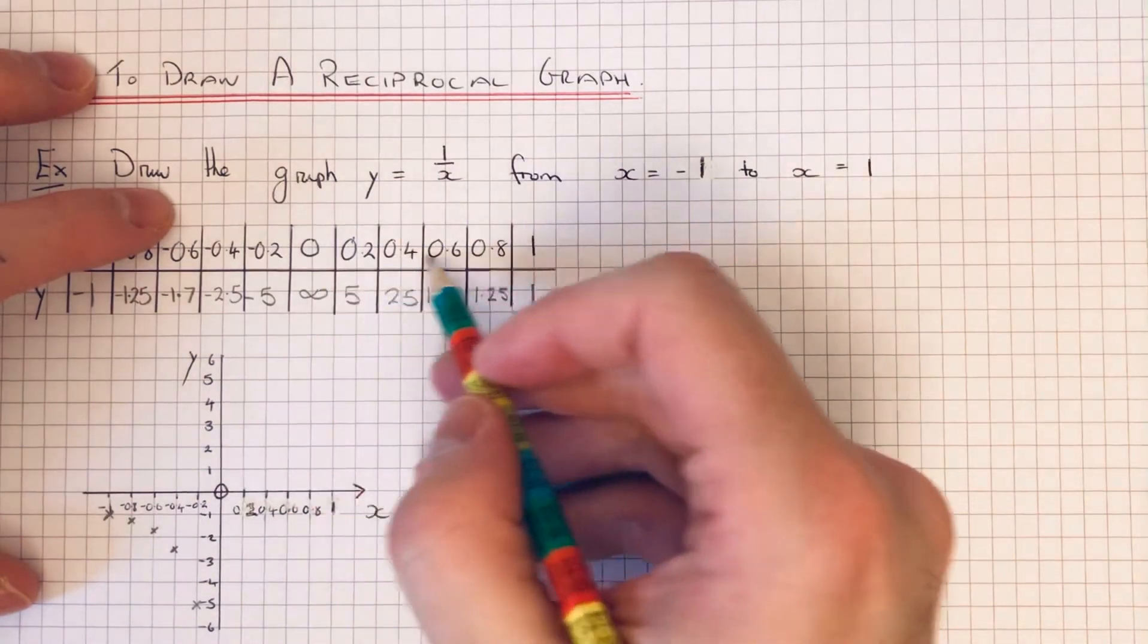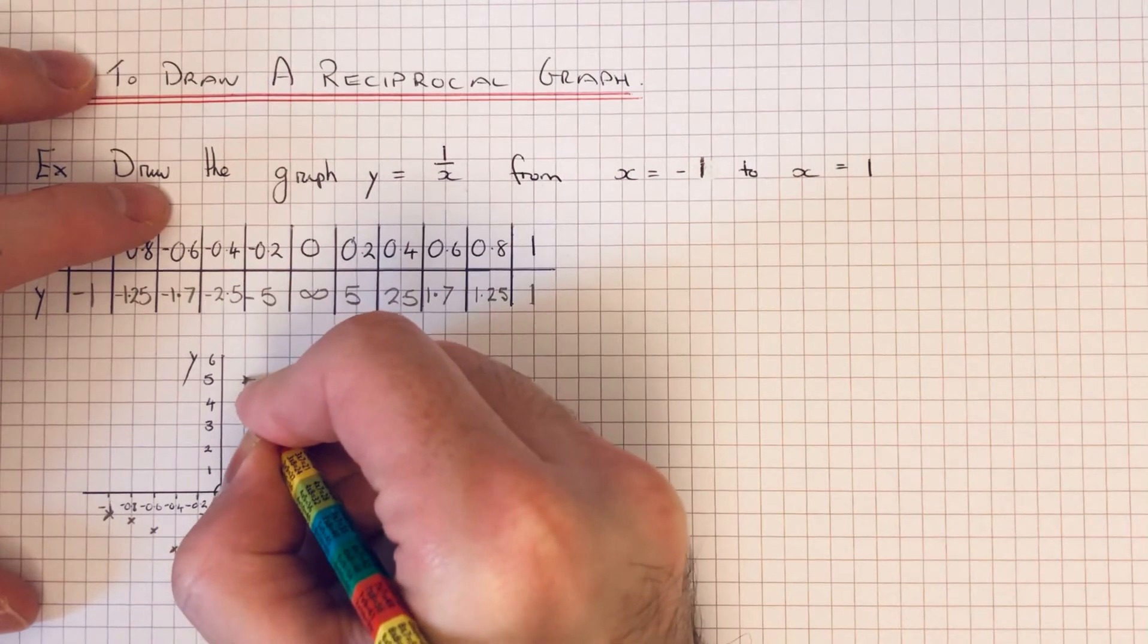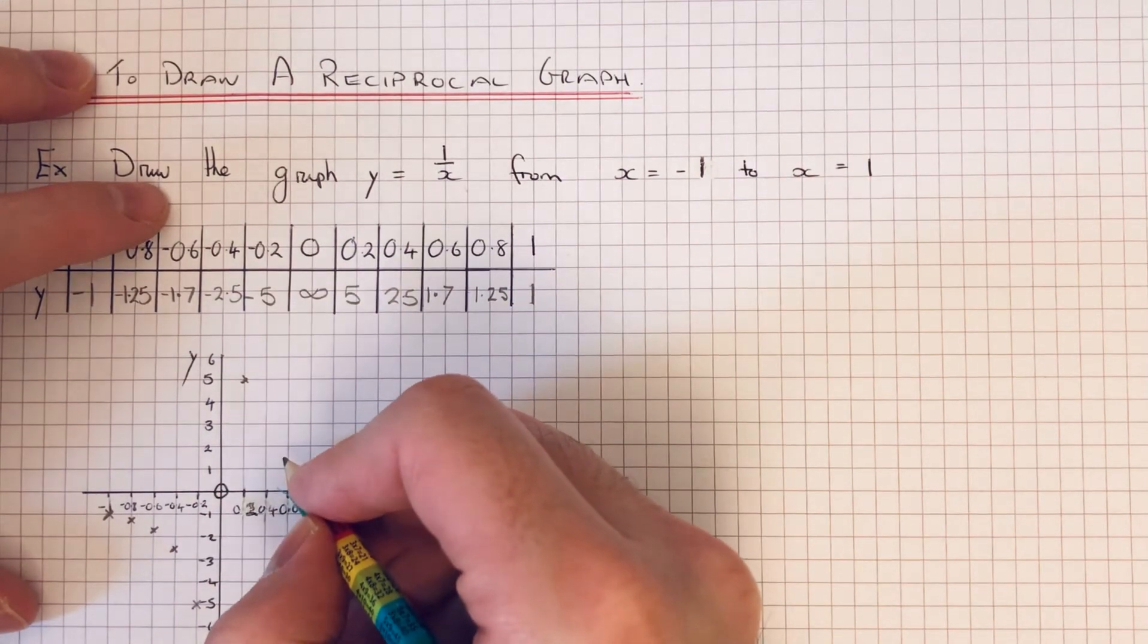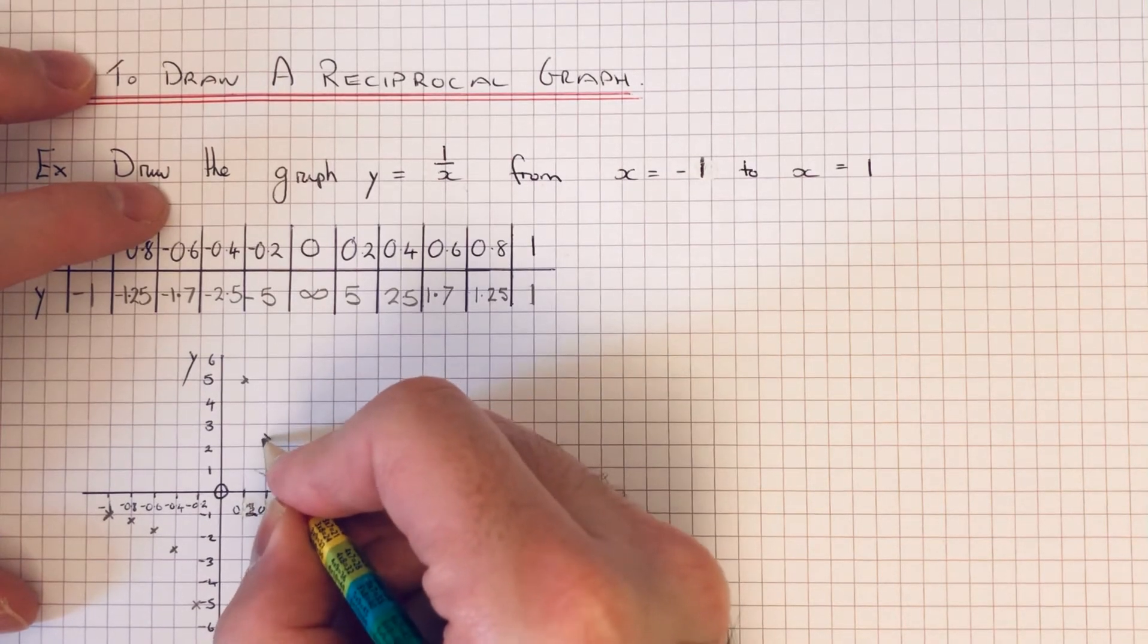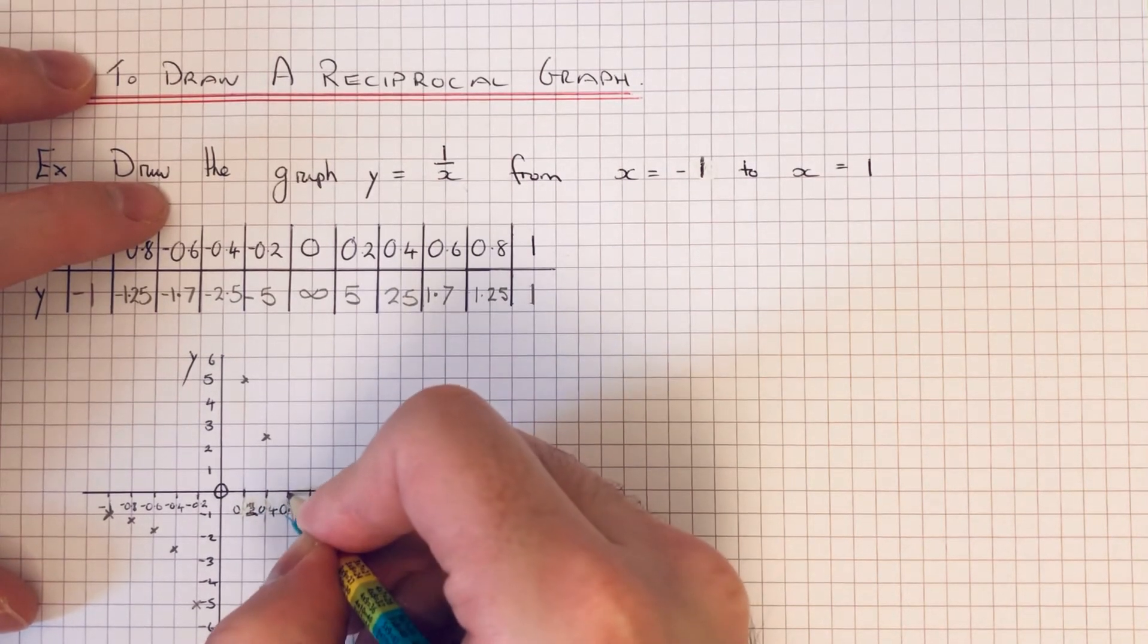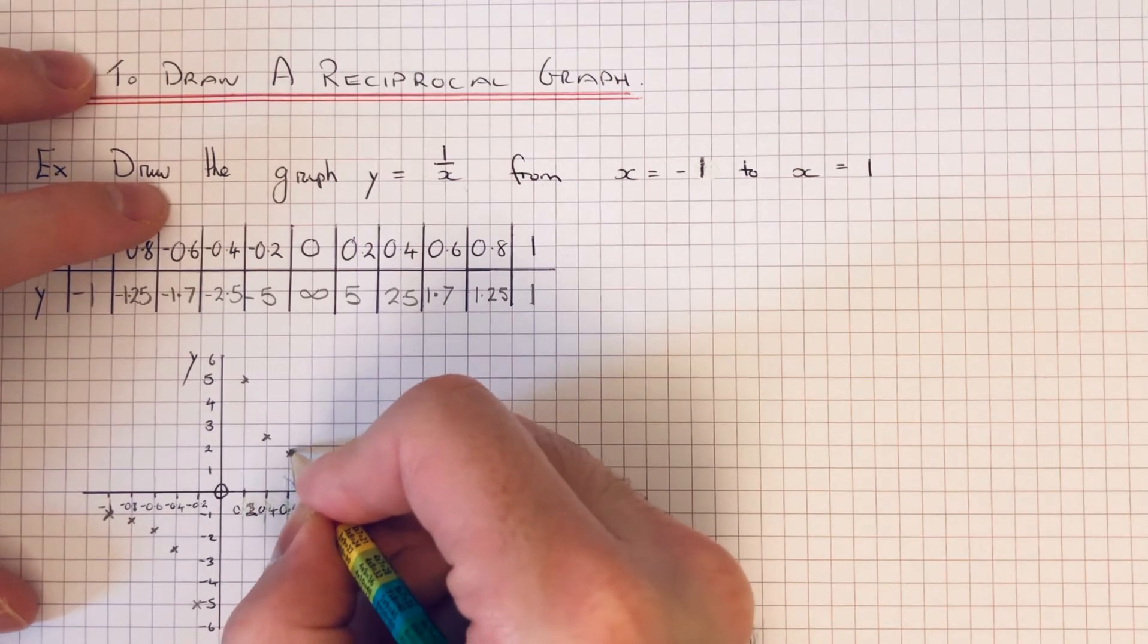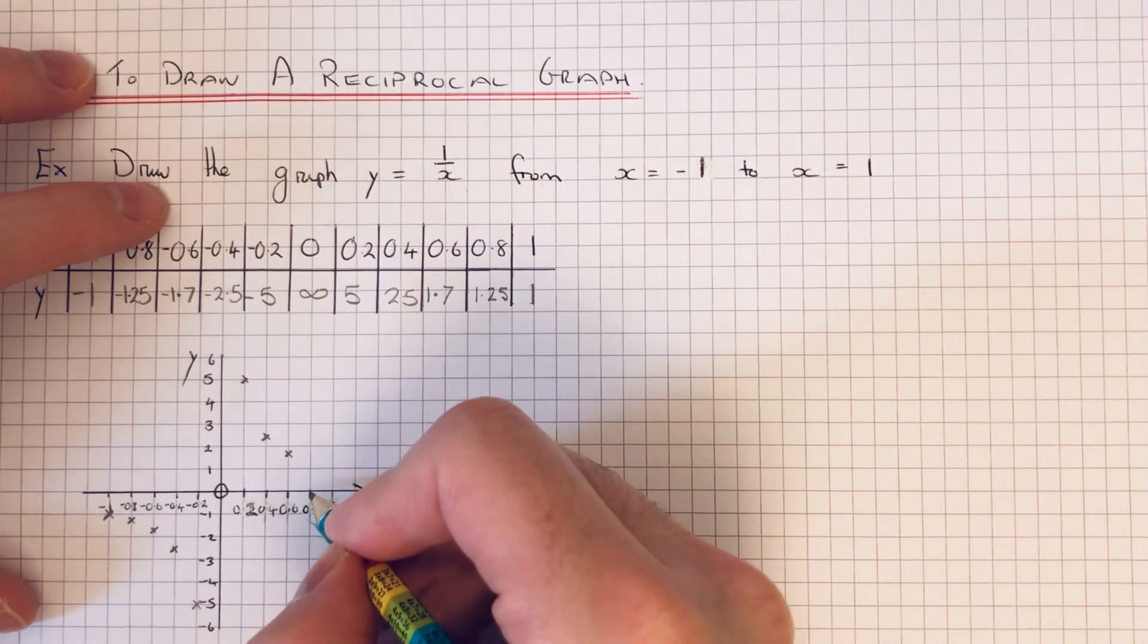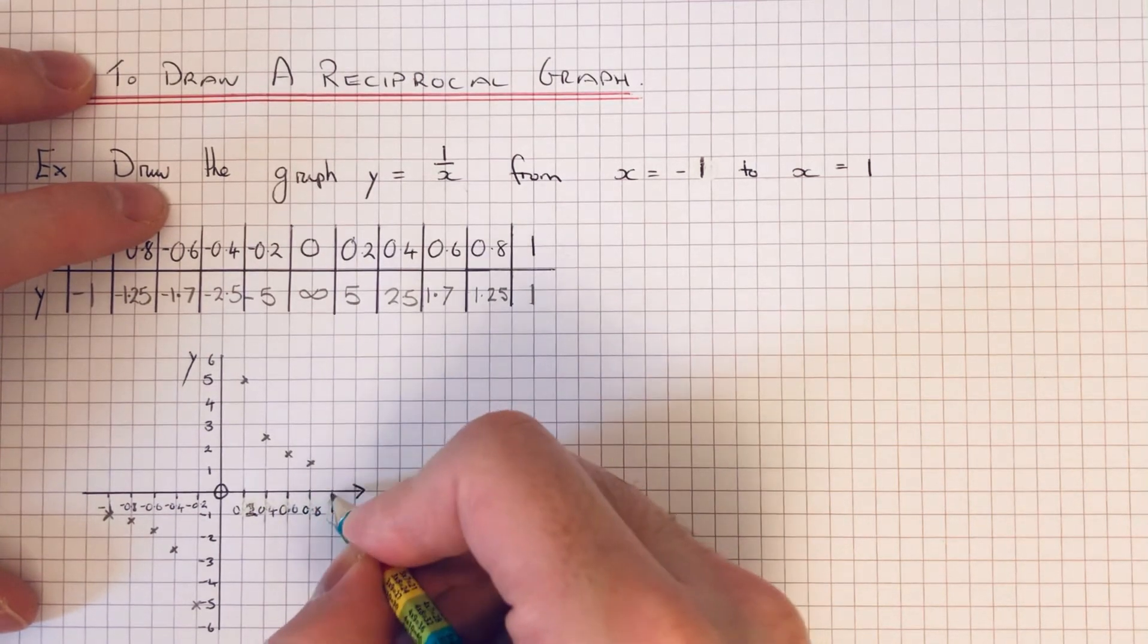Let's do our positive x-coordinates. When x is 0.2 we got 5, x is 0.4 we got 2.5, x is 0.6 we got 1.7, x is 0.8 we got 1.25, and 1 was 1.